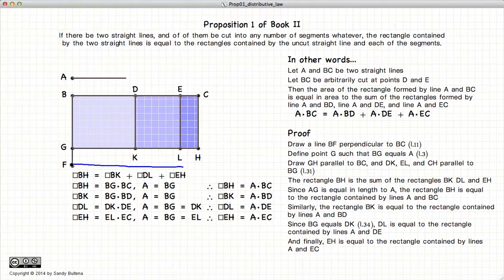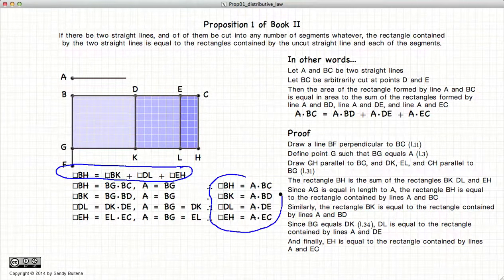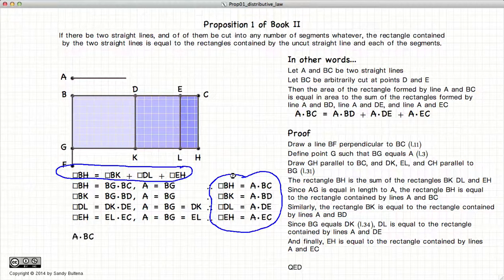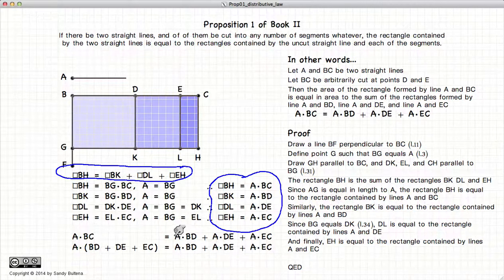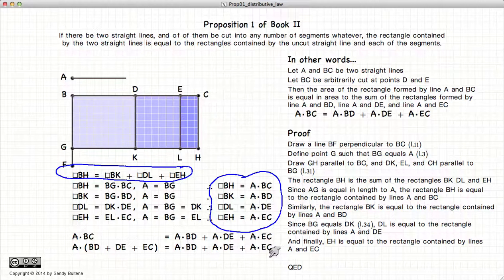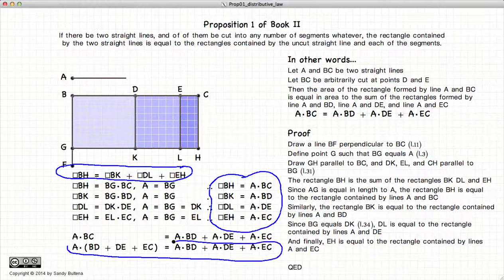So given this equation and these equations, we end up with A times BC is equal to the sum of the multiplications. Or again, the distributive rule in algebra.